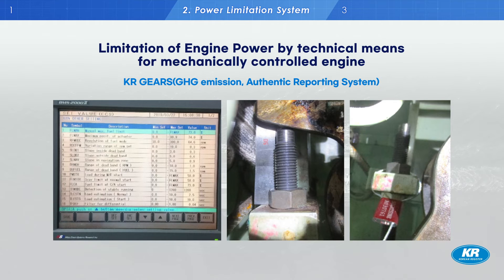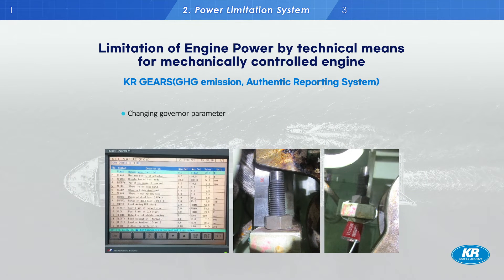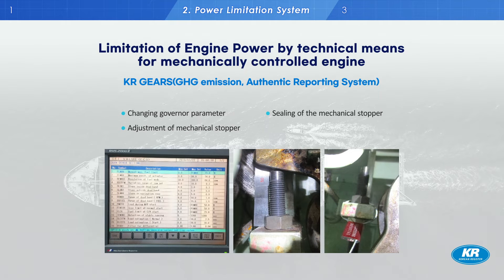Therefore, for a mechanically controlled engine: first, change the BMS's governor parameters to meet the power limit target; second, adjust the mechanical stopper setting on the local engine side to meet the power limit, then seal it by wire; finally, add an alarm point for when an unlimiting action is applied in an emergency situation.